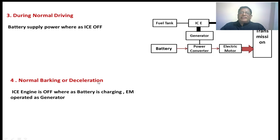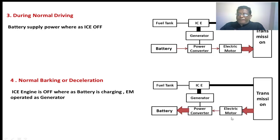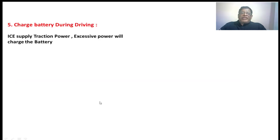Normal braking and deceleration. Whatever kinetic energy is stored in the wheels of the vehicle, the mechanical power is given to the electric motor so that the motor will be operating as a generator. The mechanical power will be converted into electrical power — that is AC power. The AC power will be rectified by means of a rectifier, charging the battery, where the IC engine will be off.